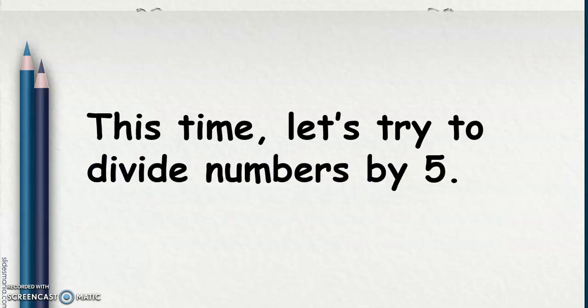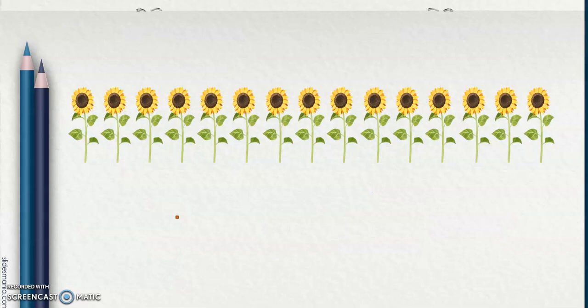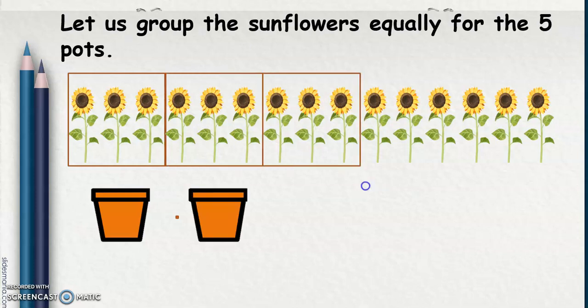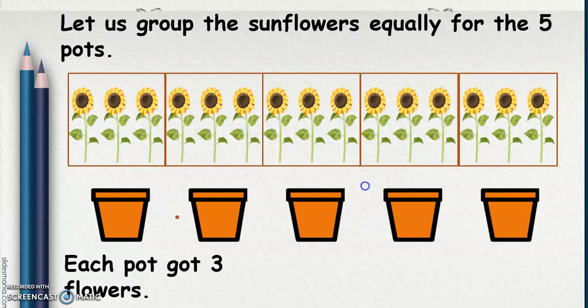This time, let's try to divide numbers by 5. There are 15 sunflowers and 5 flower pots. How many flowers should be in each flower pot? We're going to group these sunflowers: 3 for this group, 3 again for this pot, 3 for this pot, 3 for this pot, and 3 for this pot. Each pot got 3 flowers. So 15 divided by 5 equals 3.